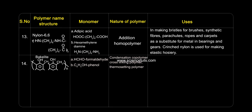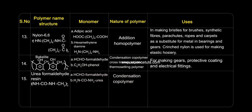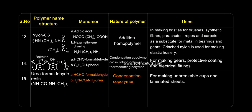Bakelite: used for making gears, protective coatings, and electrical fittings. Urea formaldehyde resin: used for making unbreakable cups and laminated sheets.